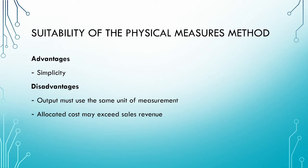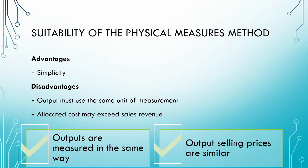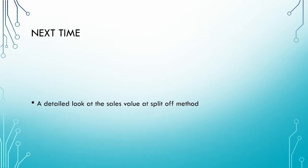The second problem, as we saw when calculating the individual product profits, is that because there is no relationship between the sales revenue and the allocated cost, it is possible that the allocated cost could exceed the sales revenue, resulting in the need for a write-down. The physical measures method is suitable when the outputs from the process are measured in the same way — for example, everything measured in kilograms — and when the outputs have similar selling prices. That brings us to the end of the physical measures method. Join us in the next video where we look at the sales value at split-off method.